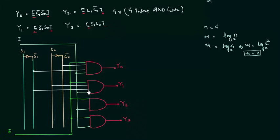s1 complement, s1. And finally for y3 we need s1, s0 complement, s1. And finally for y3 we need s1, s0. So this is how the circuit for 1 is to 4 DMUX looks.